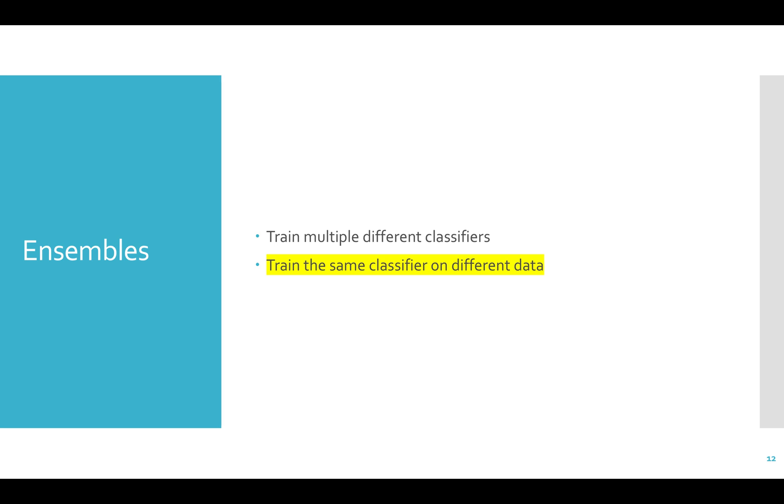If we're trying to train the same classifier on different datasets, you may be wondering, how do we get different datasets? We're only given one set of training data. Well, we can actually separate the data like we did in cross validation.